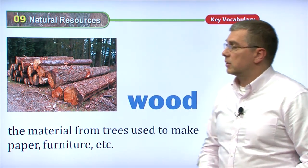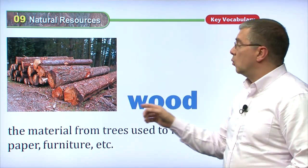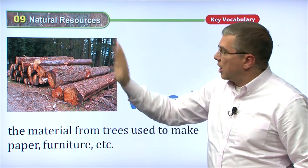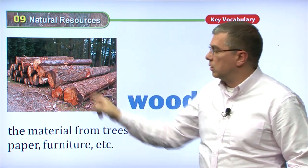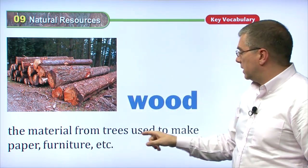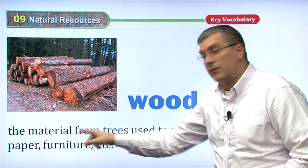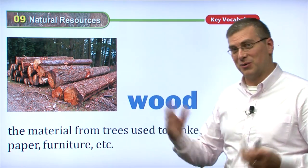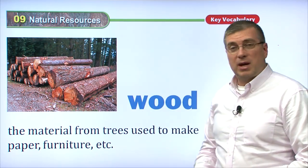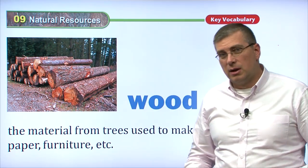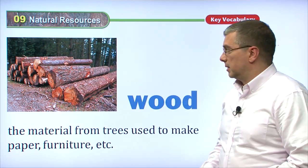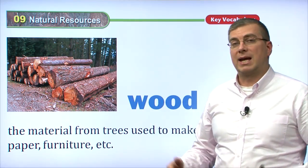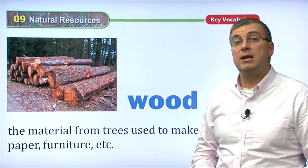Another type of resource that we use is wood. Wood comes from trees. We cut them down, chop the branches off, and what we have left is wood — the material from trees used to make paper, furniture, etc., including houses, walls, and roofs. A long time ago, before people really started using steel or concrete, wood was the primary source for making homes. Most homes were made from wood.